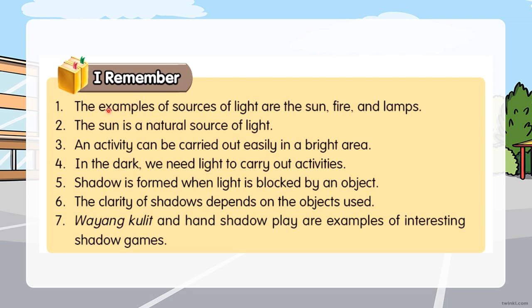Here is the conclusion from this topic. Number one: examples of sources of light are the sun, fire, and lamps. Number two: the sun is a natural source of light — there are also man-made sources like lamps. Number three: an activity can be carried out easily in a bright area. Number four: in the dark, we need light to carry out activities. Number five: a shadow is formed when light is blocked by an object. Number six: the clarity of shadows depends on the object used — opaque objects produce very clear shadows, while transparent objects produce no shadow. Number seven: wayang kulit and hand shadow play are examples of interesting shadow games.